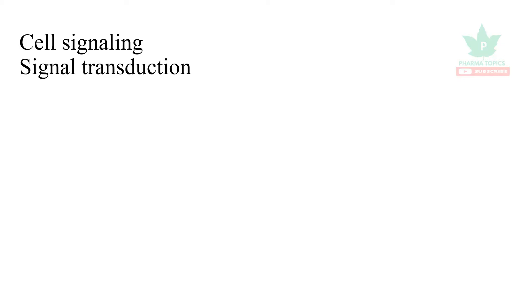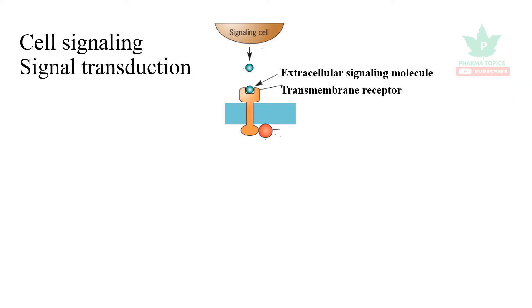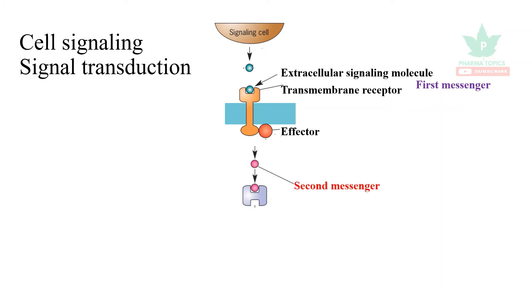Cells communicate between themselves through a process called cell communication or signal transduction. A signaling cell communicates with another cell through a signaling molecule. It binds to the next cell's transmembrane receptor, and there is an effector substance inside the cell. This is called the first messenger.